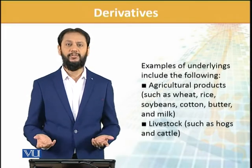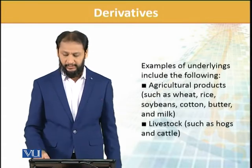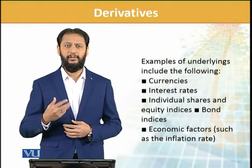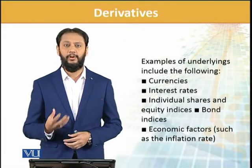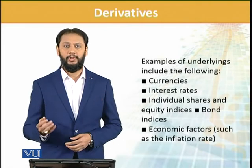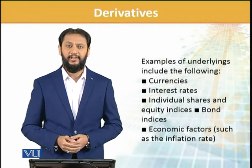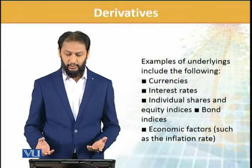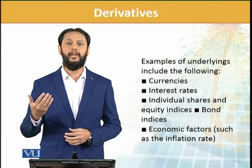Then we could have derivatives on livestock such as cattle and animals — you can make bets on their next production as well. Currencies are one of the most importantly used derivatives, because those who are importing, exporting, or have currency exposure want to safeguard themselves. Interest rates can be underlying too. Derivatives can be on shares, on entire portfolios, and on indexes — such as the Karachi Stock Exchange index.